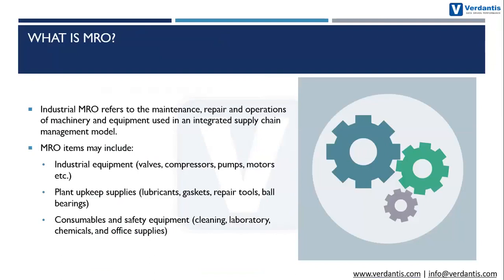What is MRO? Many organizations define it differently. It can include capital spares, insurance spares, consumables, industrial equipment, facilities, IT assets — functional assemblies like industrial equipment or single-use items like supplies, as well as consumable safety gear. Really, think of it as any indirect material.